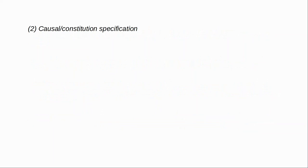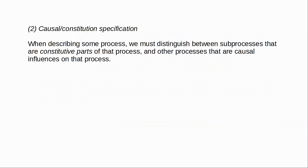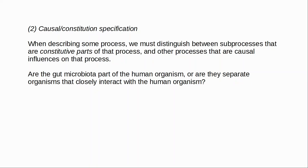A second type of boundary construction is causal constitution specification. When we describe things in the world, we must distinguish between processes that are partly constitutive of a larger process and processes that are merely causal influences on that larger process. For example, do the gut microbiota count as part of the human organism — part of what is sometimes called the holobiont — or are they separate organisms that interact closely with the human organism? This is a question of where we draw the boundaries of the biological individual.